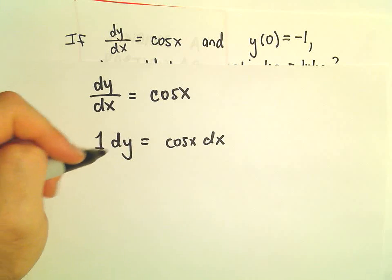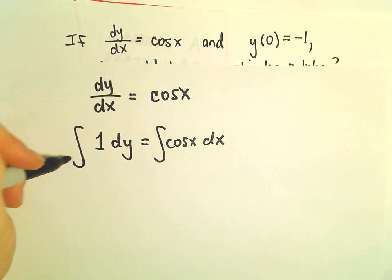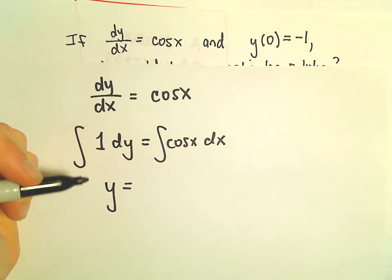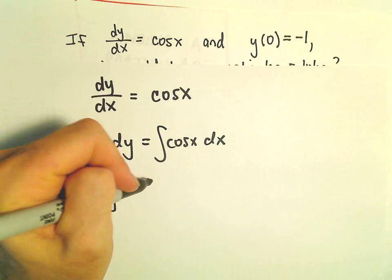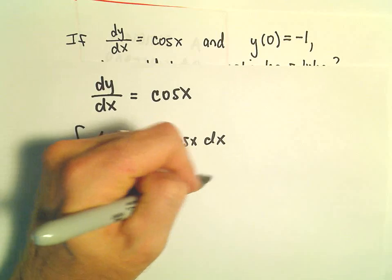The antiderivative of the left side, the antiderivative of 1 dy, is just going to be y. The antiderivative of cosine x is going to be sine x plus C.